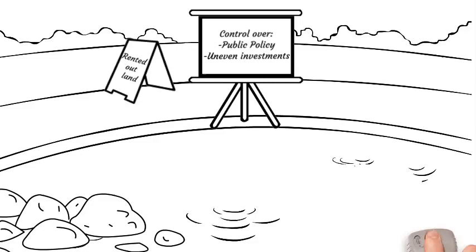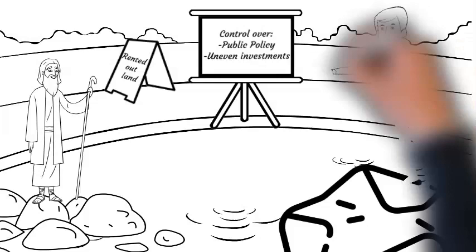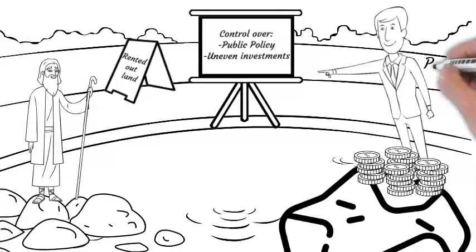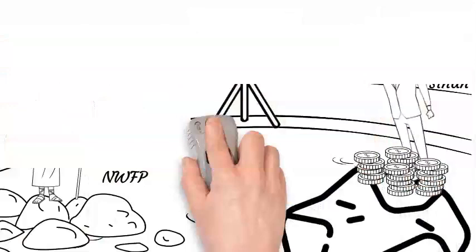The green revolution was adopted within an agricultural structure characterized by a highly unequal distribution of land ownership. Furthermore, the impacts of the green revolution were restricted only to provinces that are the backbone of agriculture and had more land, like Punjab and Sindh, while provinces like Balochistan and NWFP were completely missed out.